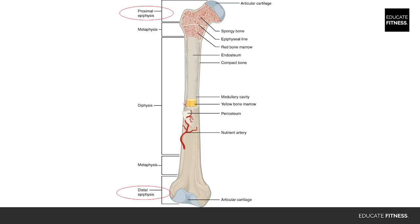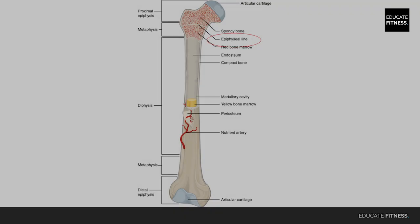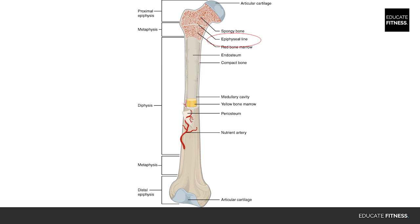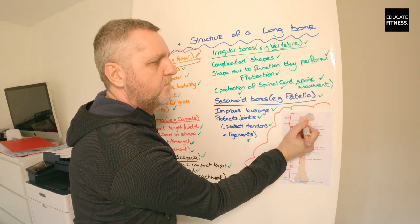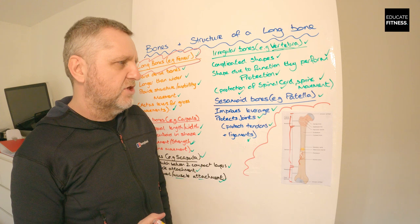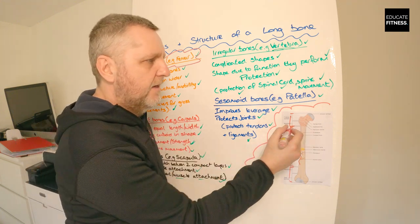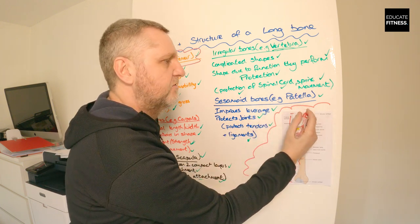The epiphysis is the expanded portion at each end of the bone. It consists of cancellous or spongy bone tissue, which gives the ability to endure compression. There is also the epiphyseal plate — a hyaline cartilage plate at each end of the long bone found in bodies that are still growing, up to around age 18 to 21. This is where new bone growth happens and the bone increases in length.